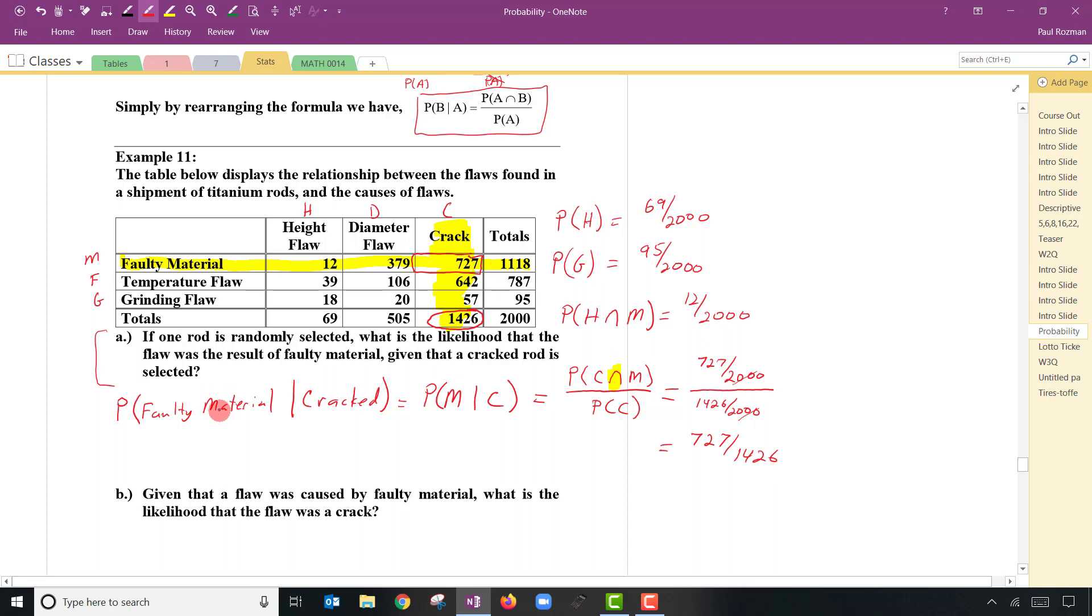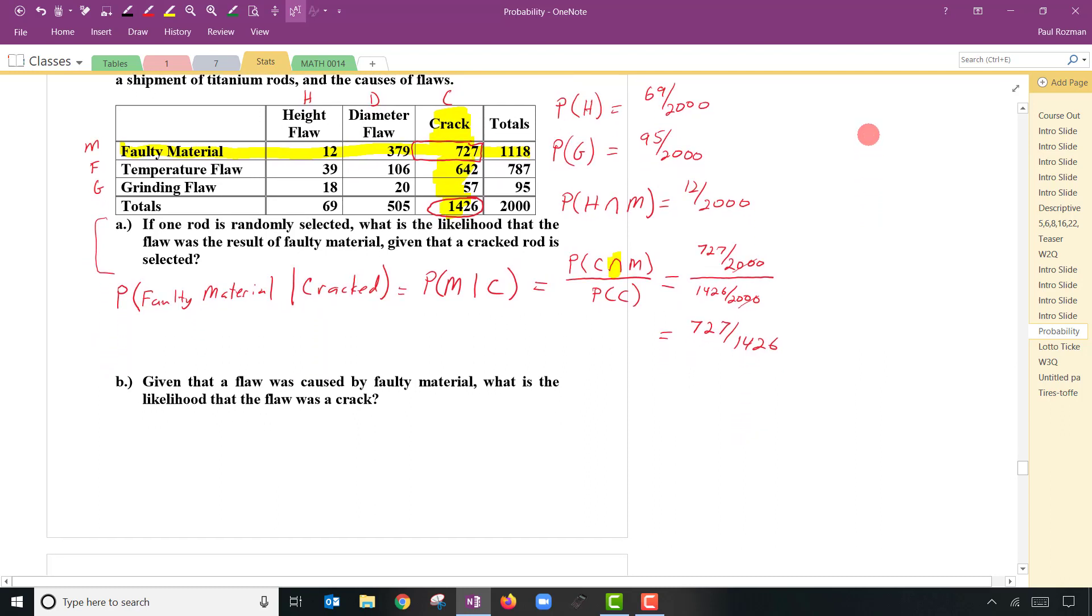Now, does it matter what order these are in? Let's find out by doing another example. Suppose you reach into your bin of 2000 titanium rods. You pick one at random. And you can tell that it has faulty material. Maybe it's a different color or something. What is the probability that you will find a crack in that rod? So it's the other way around. What is the probability of finding a crack given that you know that it is faulty material? So it's C given M.